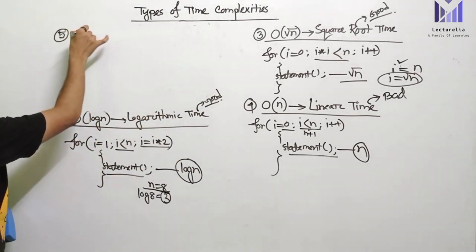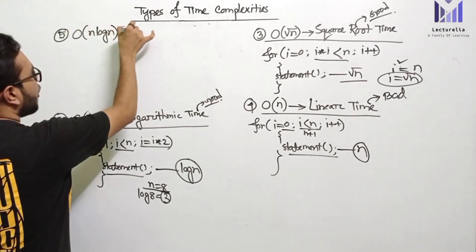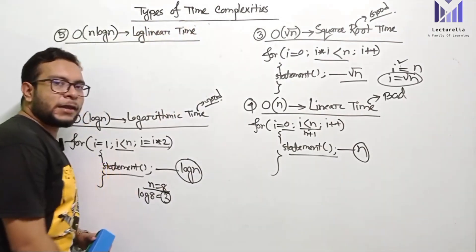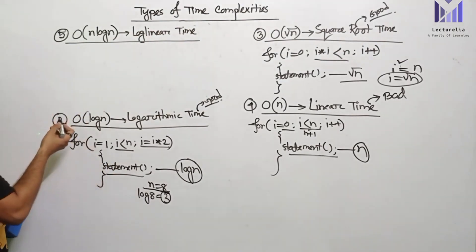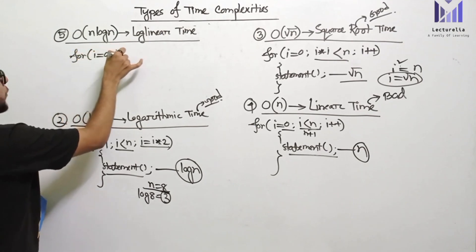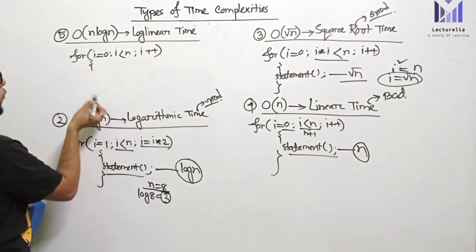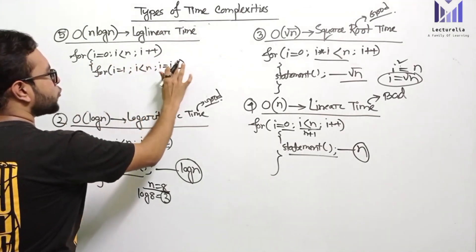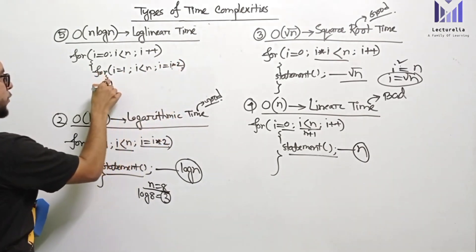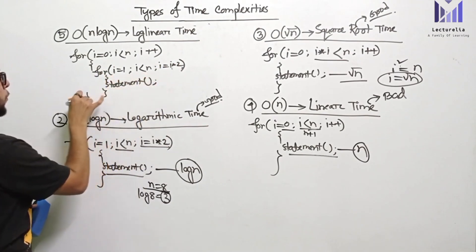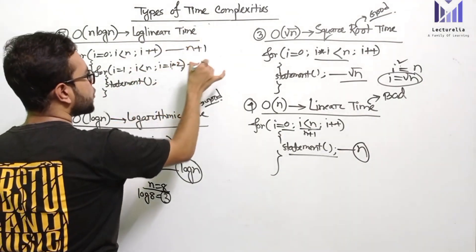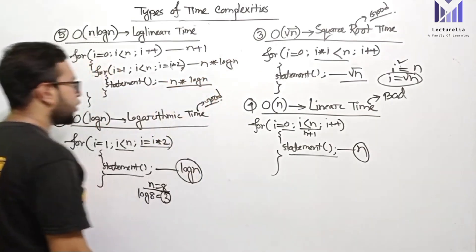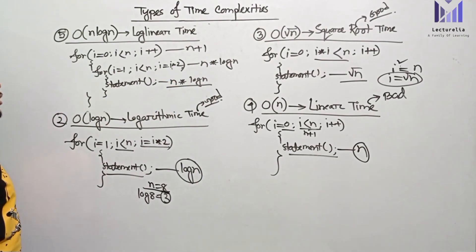The next type is order of n log n, which is log-linear time. For example: the outer loop is i equal to 0, i less than n, i plus plus; and the inner loop is i equal to 1, i less than n, i multiplied by 2. We have a statement inside. The inner loop runs log n times and the outer loop runs n times, giving us n log n time — log-linear time.